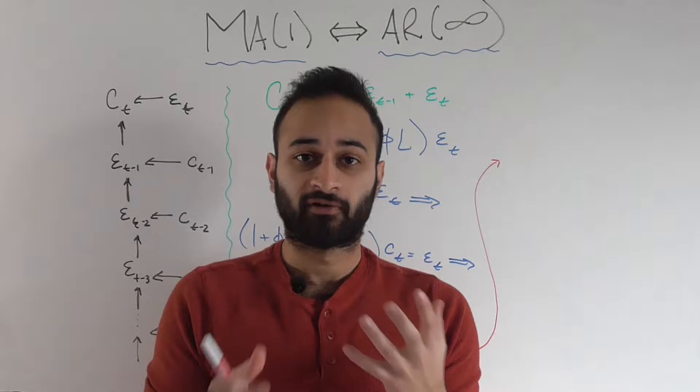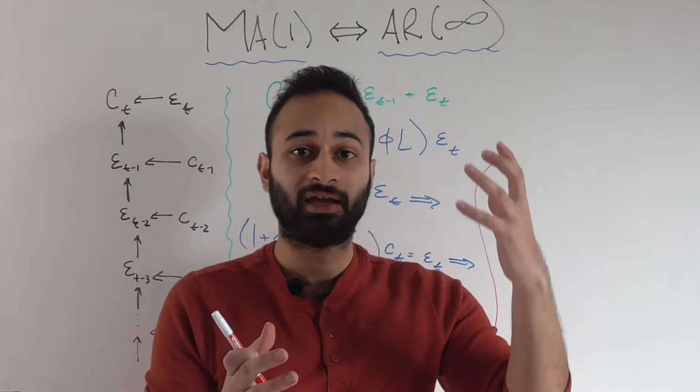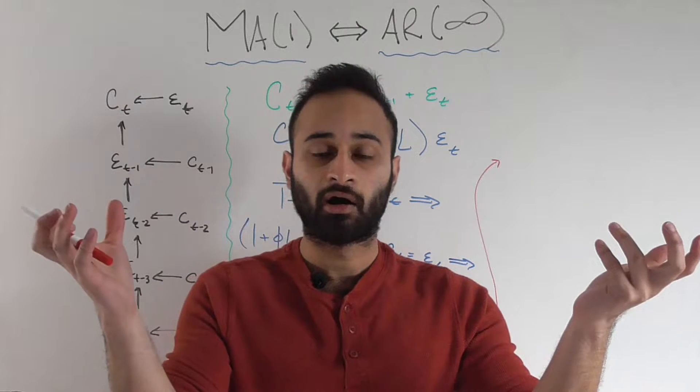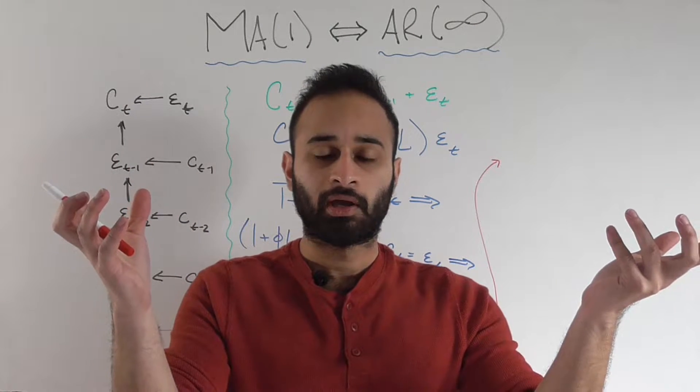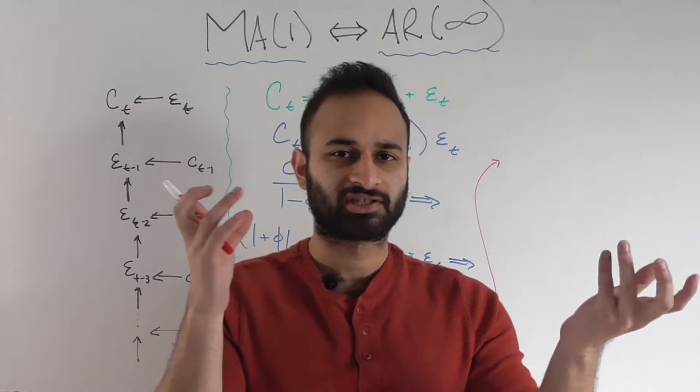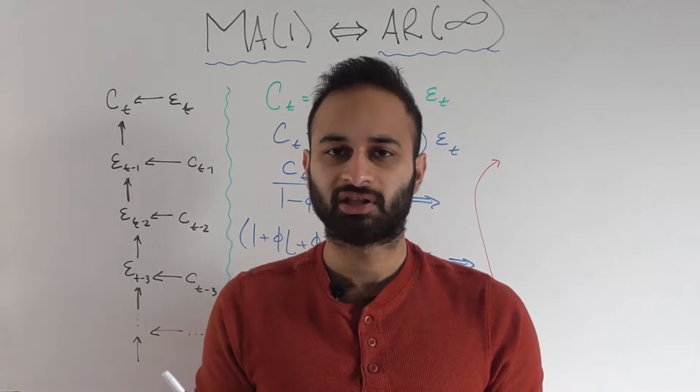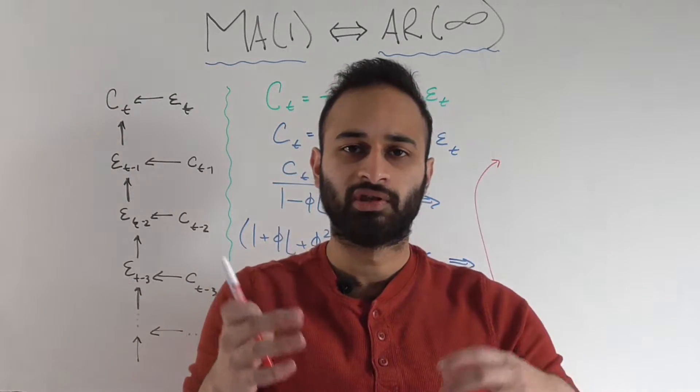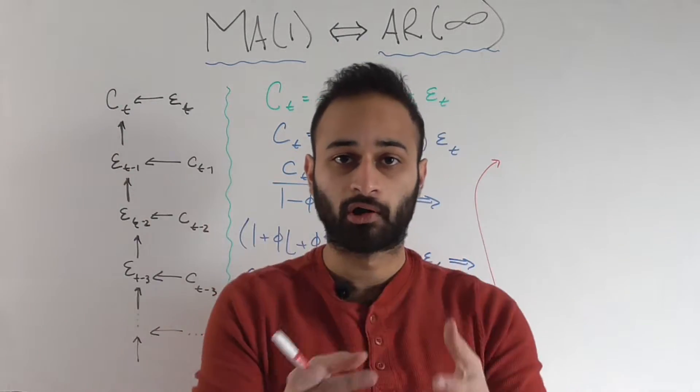So the fundamental idea of invertibility boils down to a connection between the MA, the moving average, and the AR, the autoregressive model. At first glance it doesn't seem like there's anything similar about these models because we constructed them in two different ways for two different purposes, and then eventually we put them together into the ARMA model to get the best of both worlds.